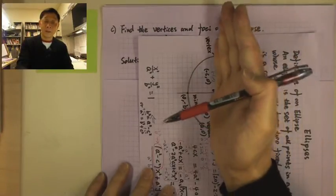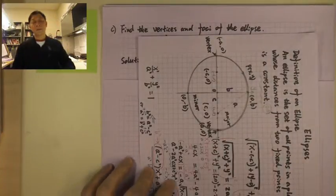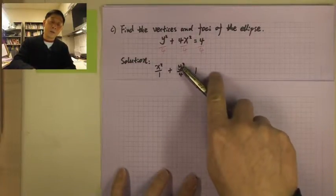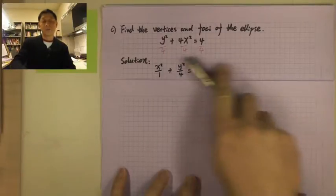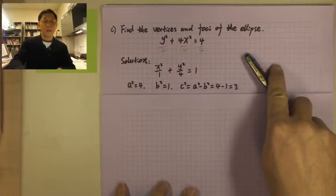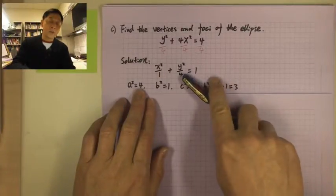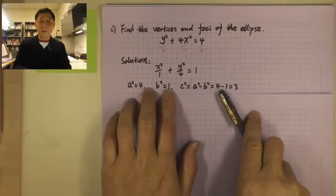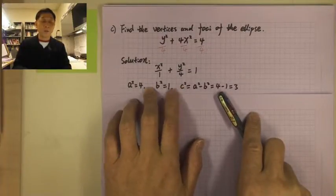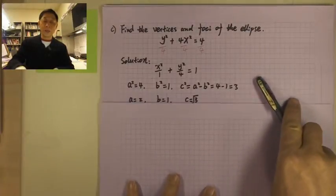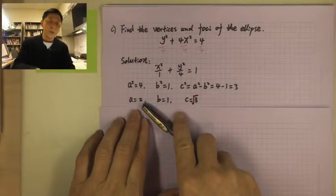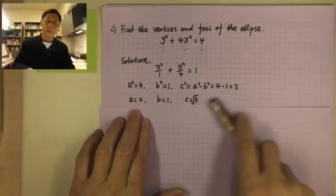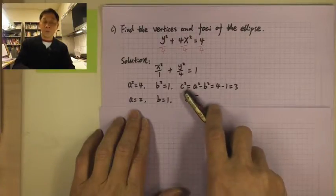The major axis is along the y-axis. So the big number 4 is below y, not below x. Therefore a squared is 4, b squared is 1, and c squared equals a squared minus b squared, which is 4 minus 1 = 3. Taking the square root: a = 2, b = 1, c = √3.